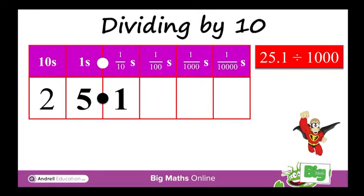Let's look at an example together and I can talk you through the steps that are in your work pack. So we've got 25.1 divided by 1000 and that number is in a place value grid. It's the same when we're multiplying — it's much easier to understand how the values of each digit is changing when we can see it in a place value grid.